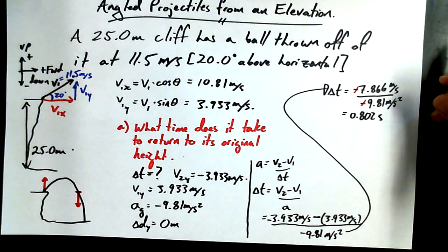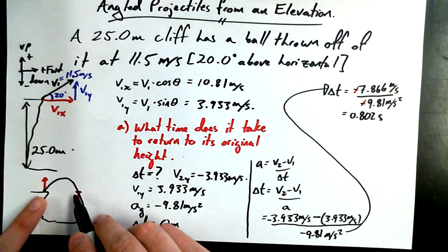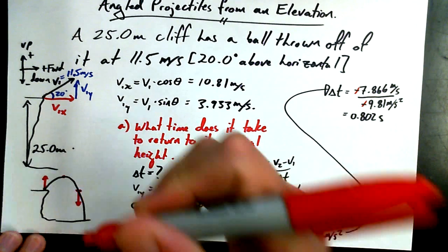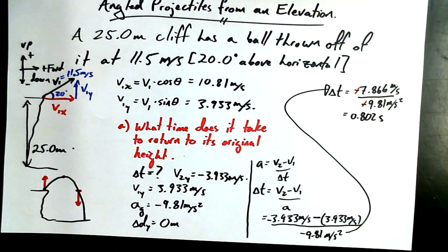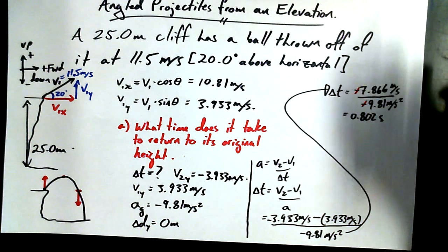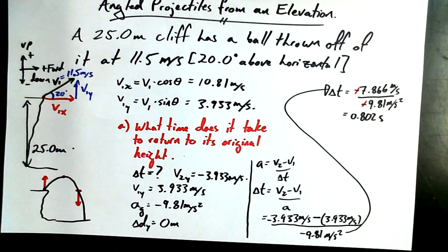I like it. So it took 0.802 seconds to get back to the original height. Can you guess by symmetry arguments, how hard is it to figure out how long it took to get to the maximum height? Divide by 2. It's not hard at all. Or you could sub in 0 for V2. There's so many ways to solve these problems. As long as you follow the rules, you'll get the same answer. All right, so we know the amount of time it takes to make this flight. I want to carry on with this, and I want to try a part B.